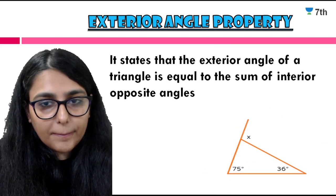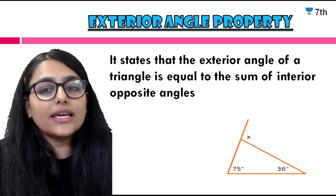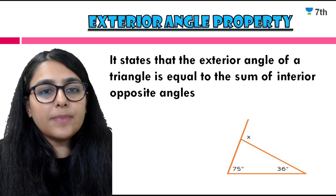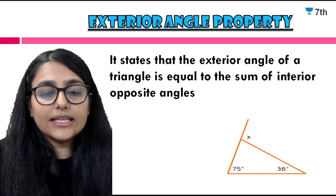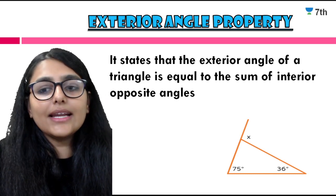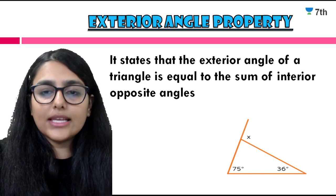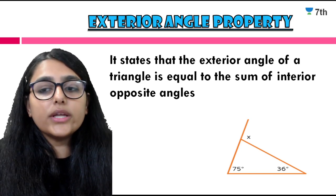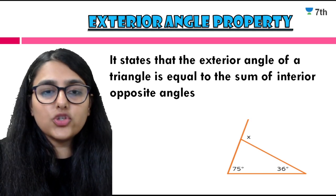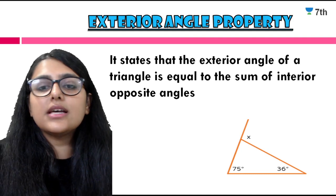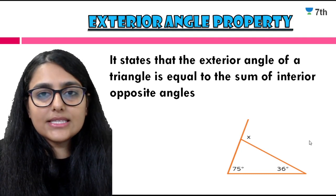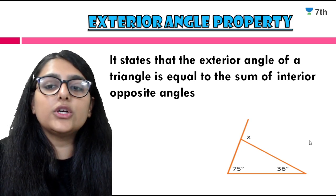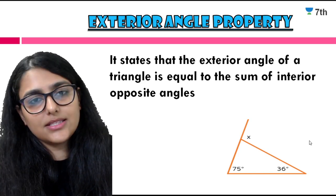Now let's start with the first property of a triangle. So far we've seen that a triangle is a three-sided figure with three angles and three vertices. All the properties we will study are related to the angles of a triangle. We will cover: exterior angle property, angle sum property, Pythagoras property, and the sum of sides of a triangle. The exterior angle property states that the exterior angle of a triangle is equal to the sum of the two interior opposite angles.